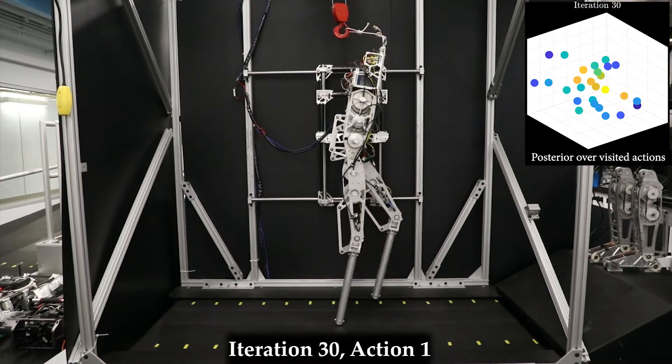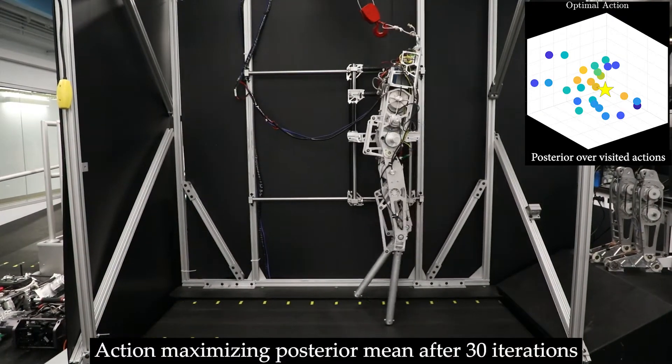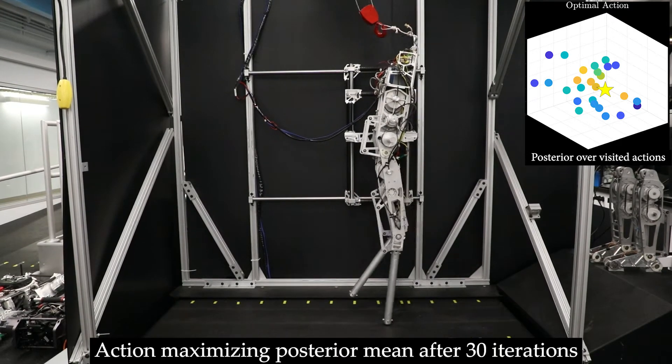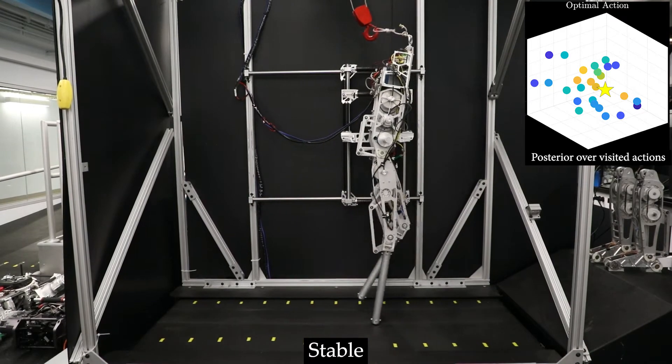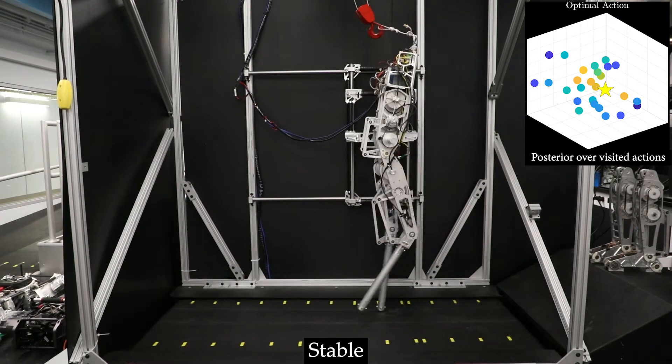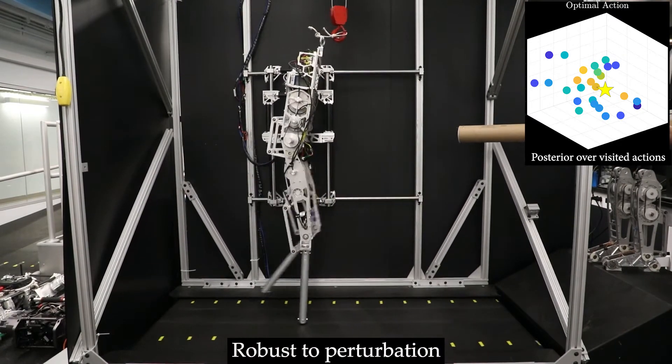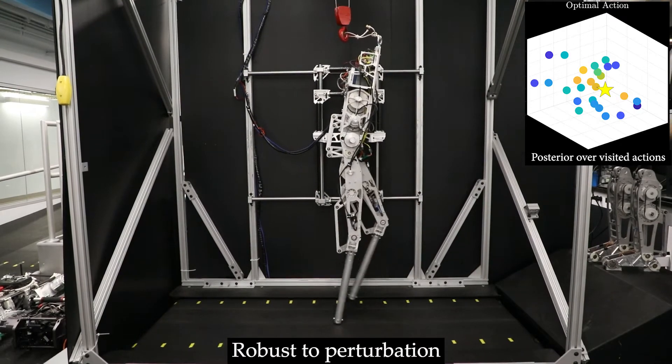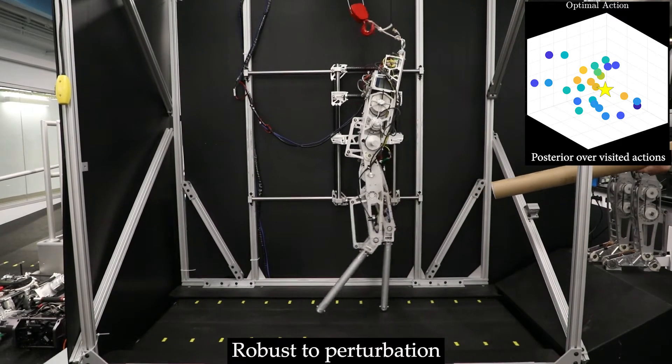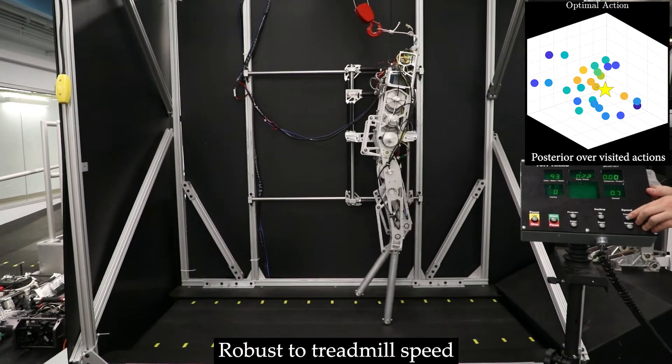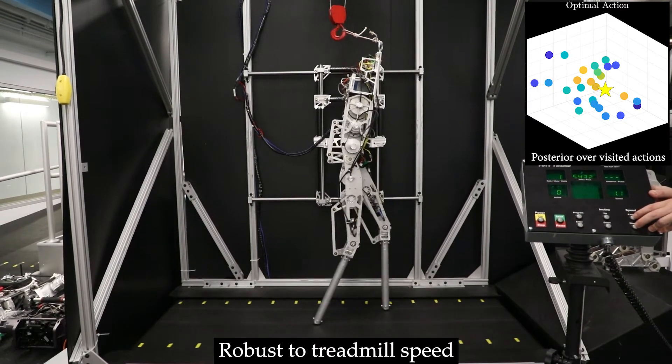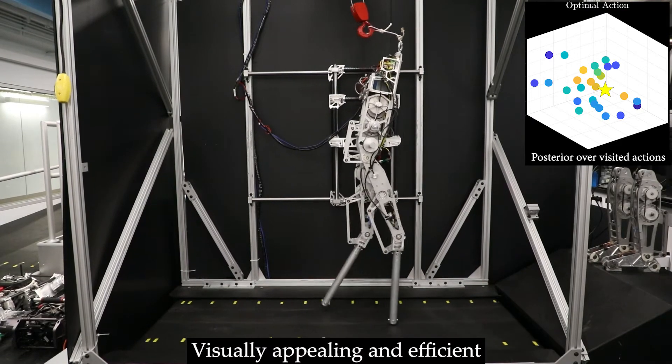At the end of the 30 iterations, the set of constraint values believed by the algorithm to maximize the user's underlying preferences resulted in experimental walking that was stable, robust to perturbation, robust to treadmill speed, visually appealing, and efficient.